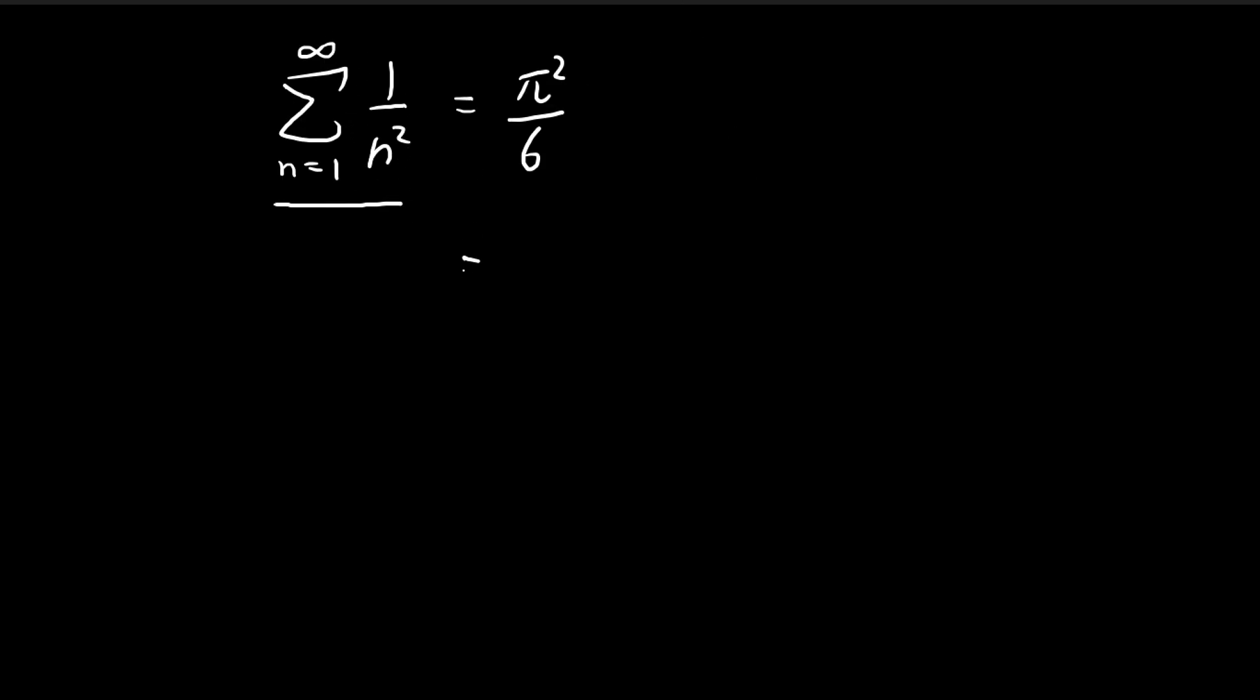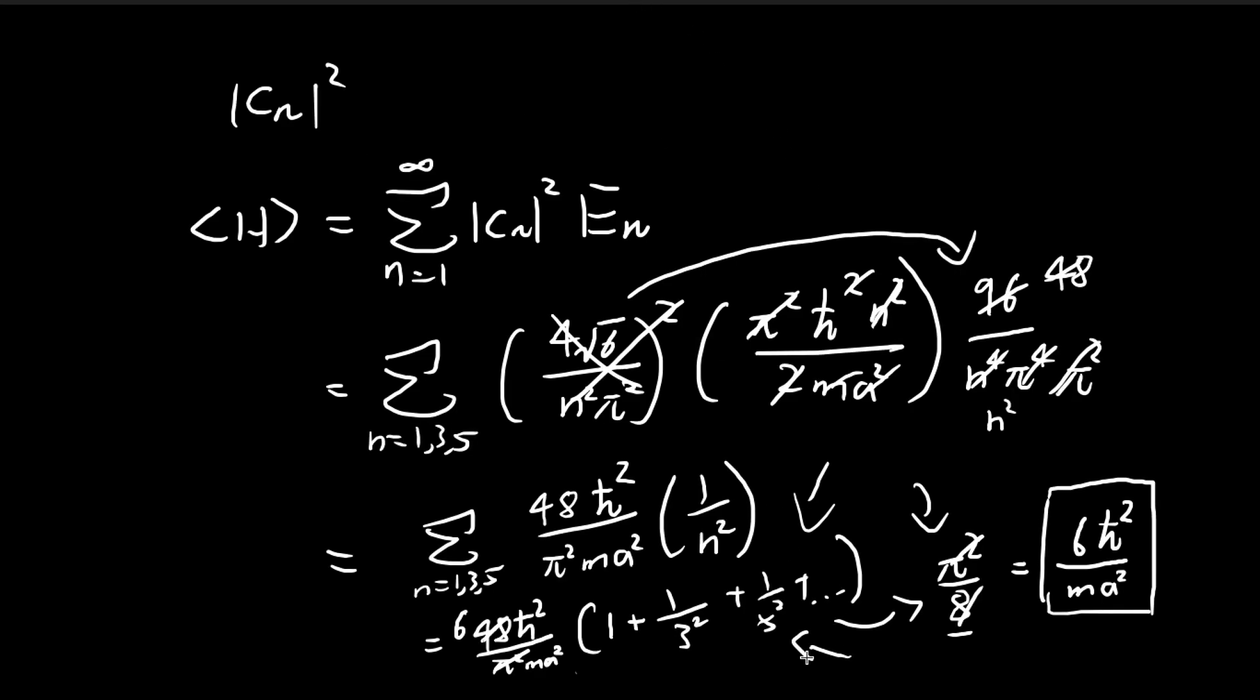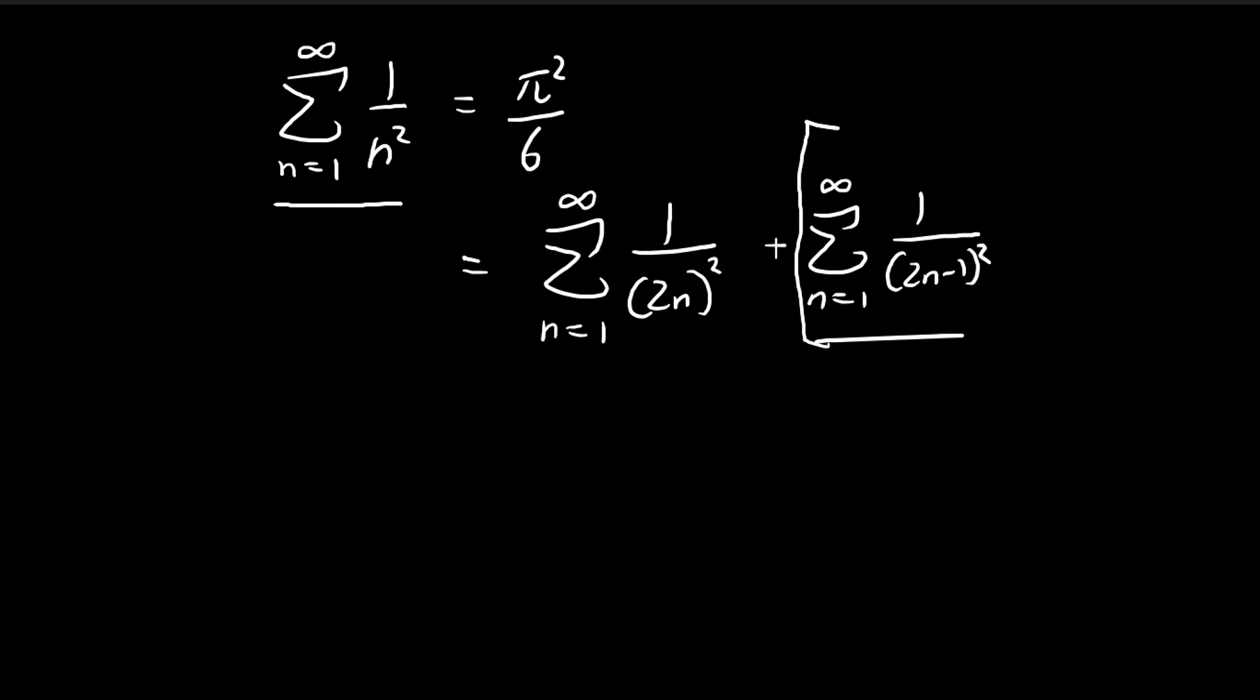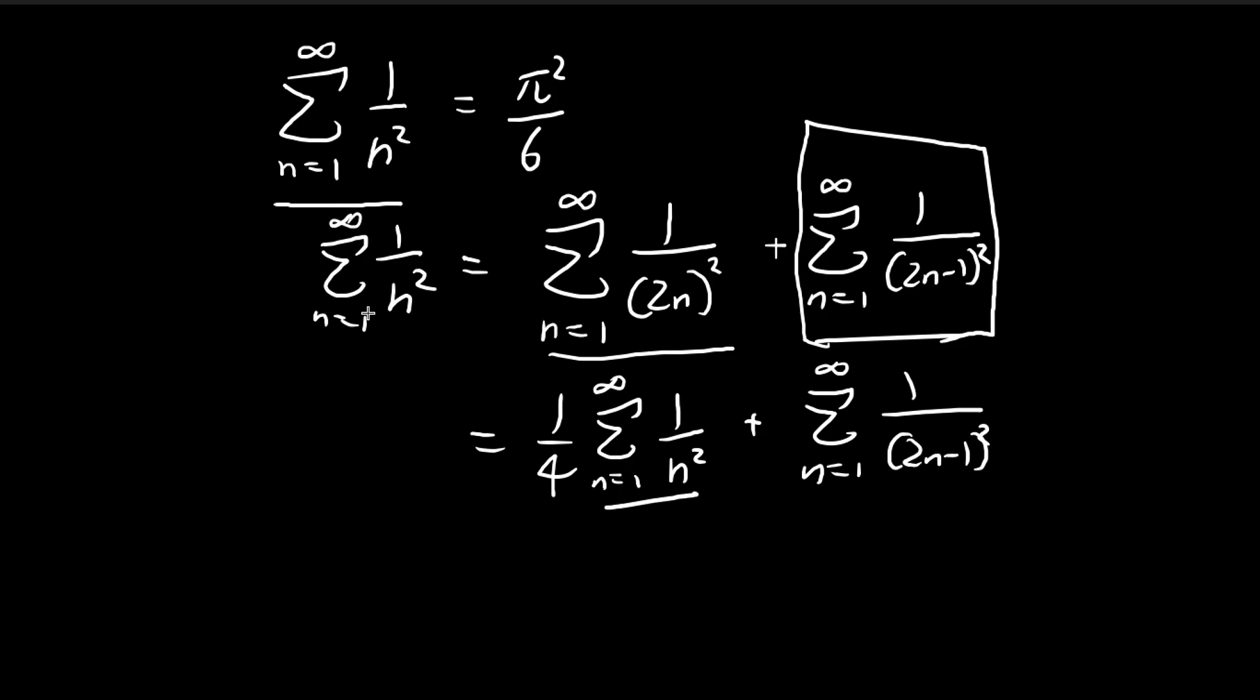So using this result, we can actually deduce what this would be. So the sum of 1 over all reciprocal squares, we can break this up into the even numbers. So this would be 1 over 2 squared plus 1 over 4 squared. And then this part would be the odd numbers. So this summation here would be exactly this. So this is what we're trying to find. And then this we know is equal to pi squared over 6. And then notice that for this expression, I can take away 4 from the denominator. And then you will end up with something that looks exactly like the original summation.